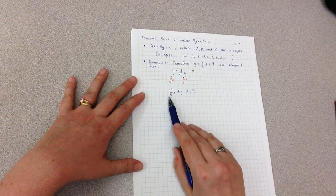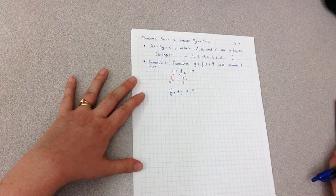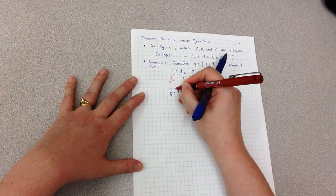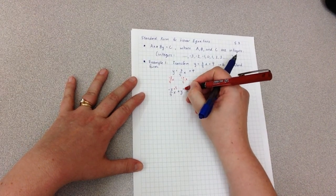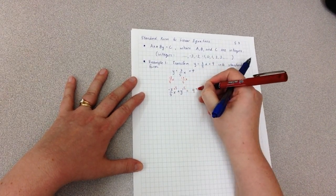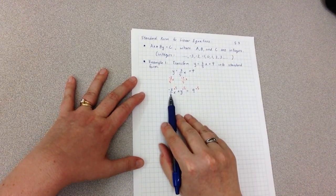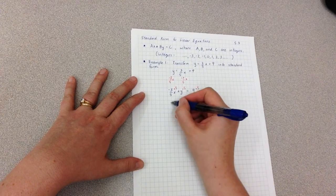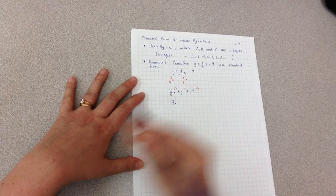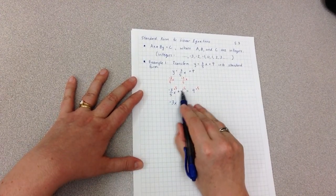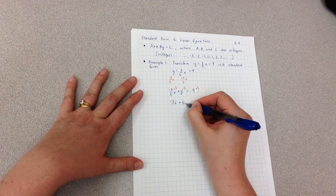And I do that by multiplying each and every piece by 5. Multiplying by 5, dividing by 5, they're inverses, they undo each other. So I have negative 3x, 5 times y is 5y, equals 5 times 9 which is 45.